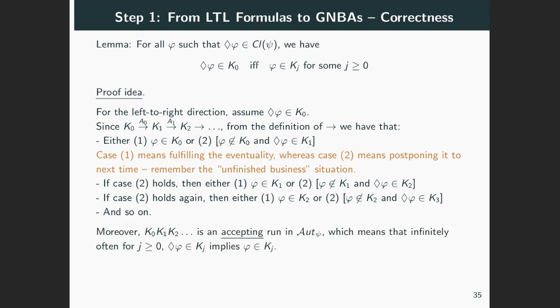But the sequence K is an accepting run in our automata, which by the definition of the accepting sets contains among others the fulfillment of eventually φ. This means that eventually φ in Kⱼ implies φ in Kⱼ infinitely often, that is, for an infinite number of j's.